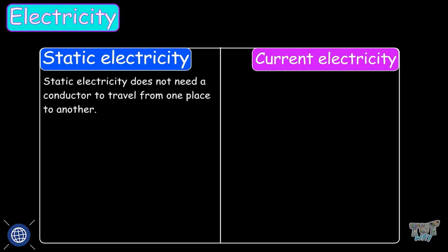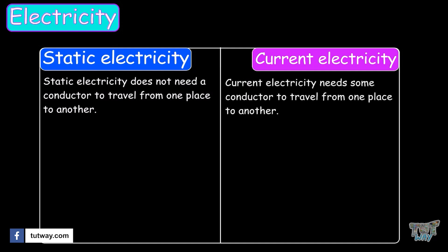Static electricity does not need a conductor to travel from one place to another. Whereas current electricity needs some conductor to travel from one place to another.